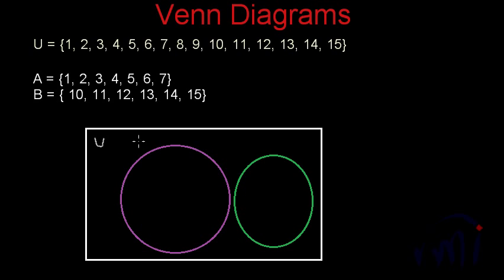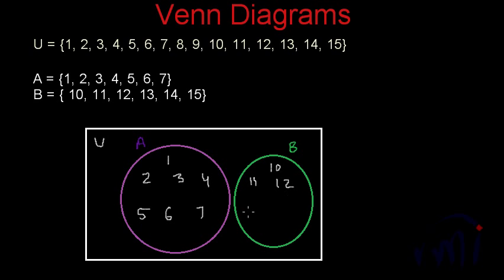The purple circle represents set A and the green circle represents set B. The elements of set A are 1, 2, 3, 4, 5, 6, and 7, and the elements of set B are 10, 11, 12, 13, 14, and 15. The remaining elements of the universal set that don't belong to either A or B — which are 8 and 9 — are written outside the circles but inside the rectangle.